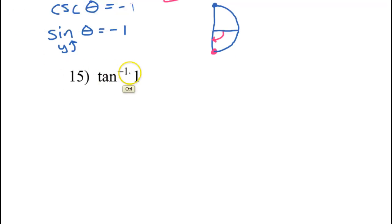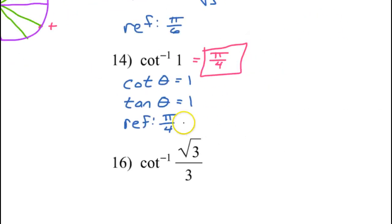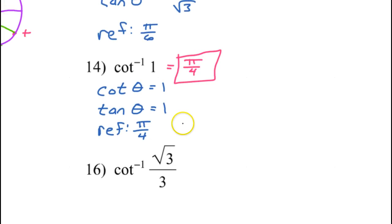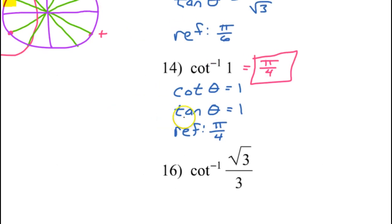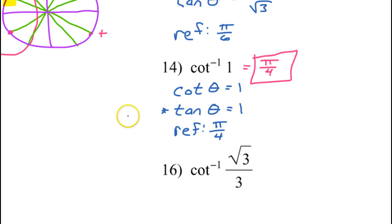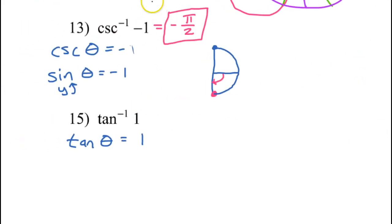Number 15: inverse tangent of 1. You must ask yourself the tangent of what angle is 1. We already did this problem, so we already know the answer is going to be pi over 4.